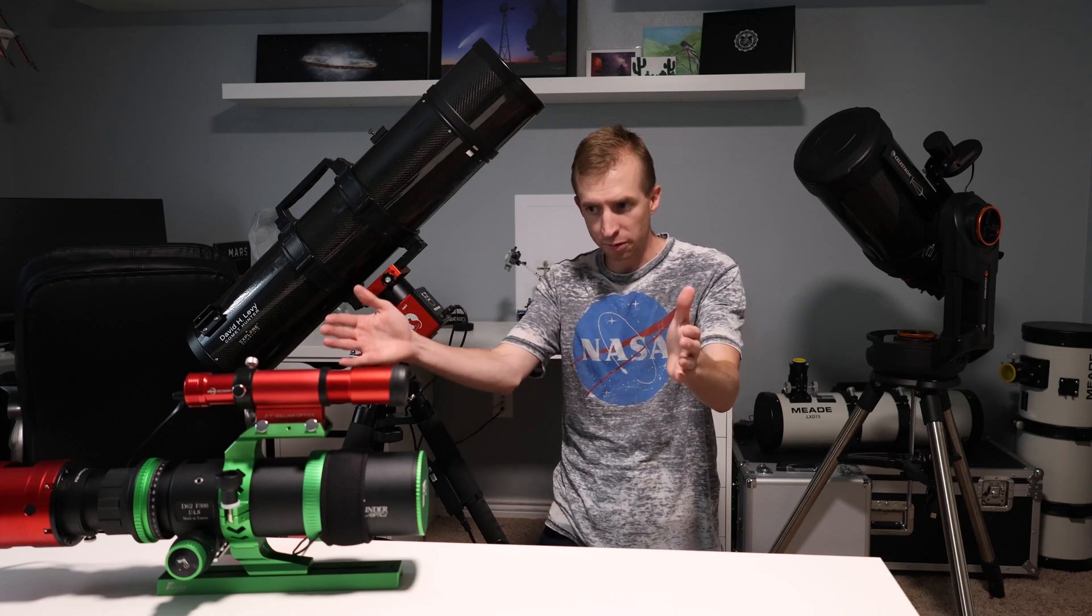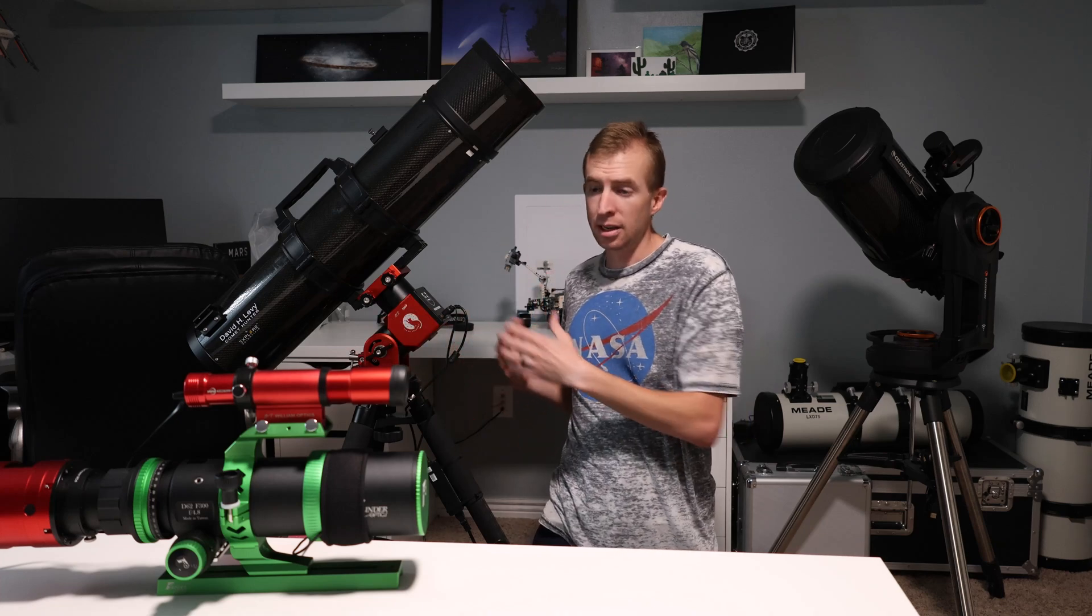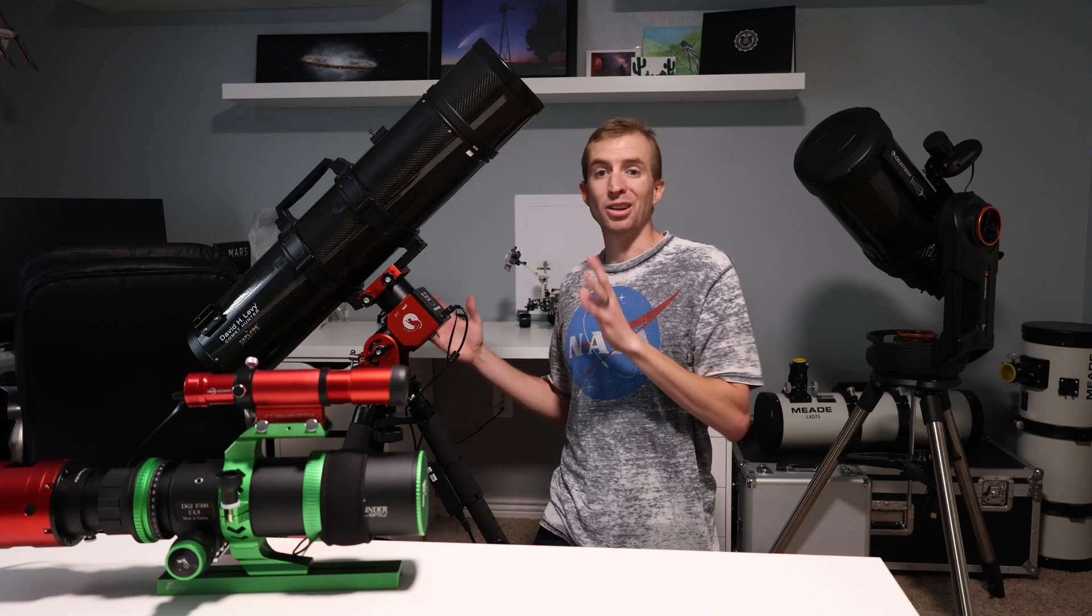So if you're going to use like a longer refractor or a Newtonian, you may want to consider getting a pier extension for the AM3. But besides that, it works really well for telescopes that look too big for it.